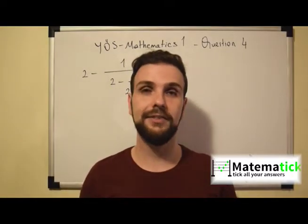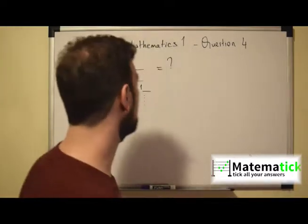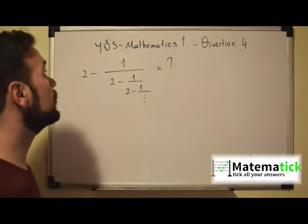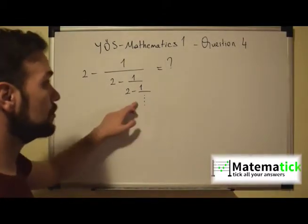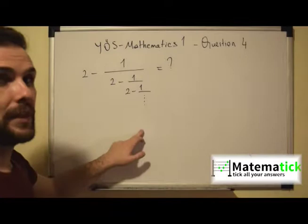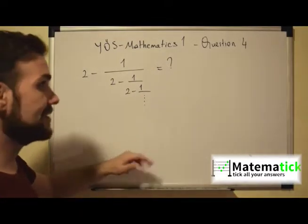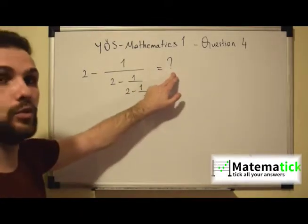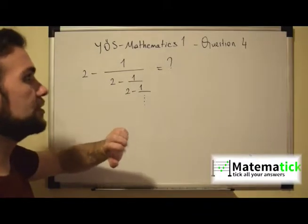In this question we have 2 minus 1 over 2 minus 1 over 2 minus 1 over, and it goes on like this — it doesn't have an end. So what is that equal to? In these kinds of questions, what do we do?